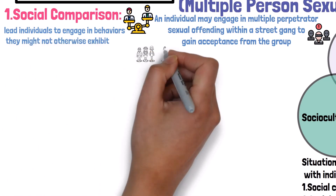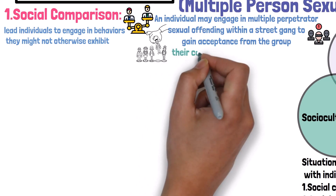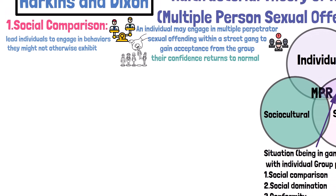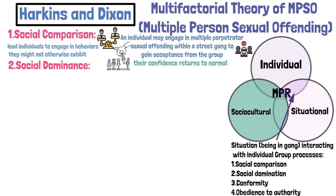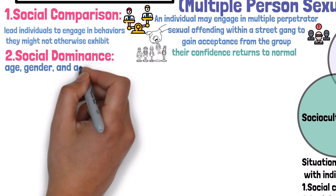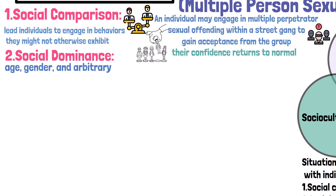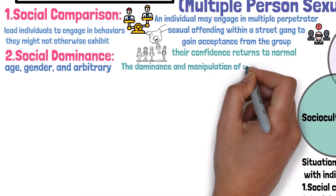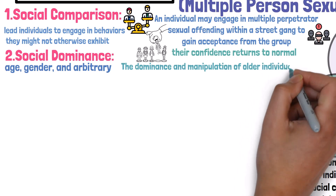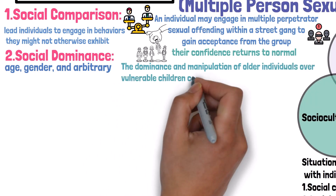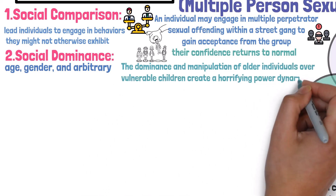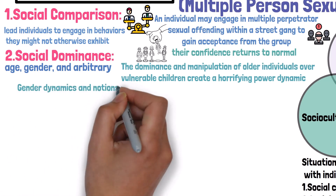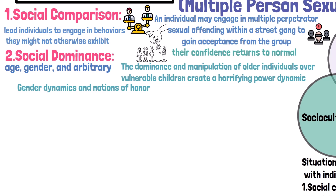For social dominance, factors like age, gender, and arbitrary sets can contribute to multiple perpetrator sexual offending. In pedophile rings, the dominance and manipulation of older individuals over vulnerable children create a horrifying power dynamic. Similarly, in certain gangs or fraternities, gender dynamics and notions of honor may drive individuals to engage in group offending.